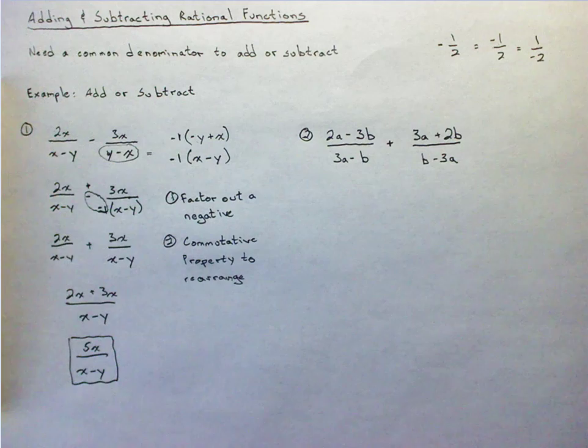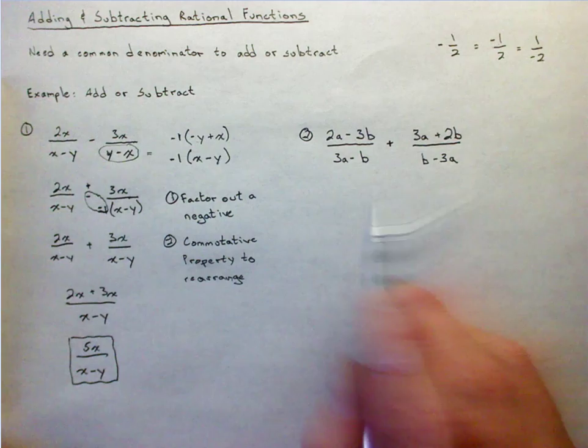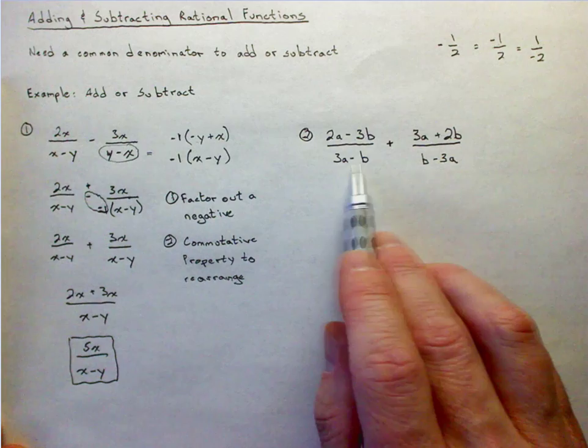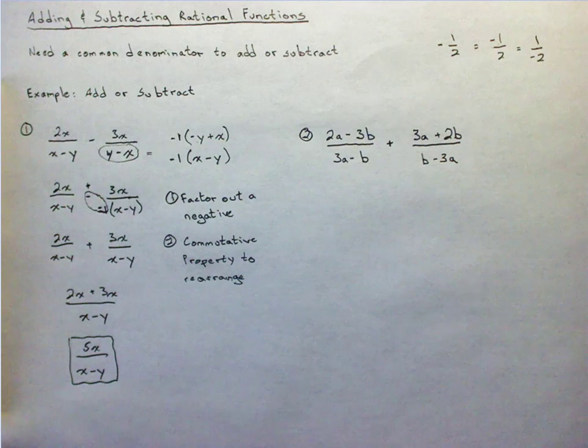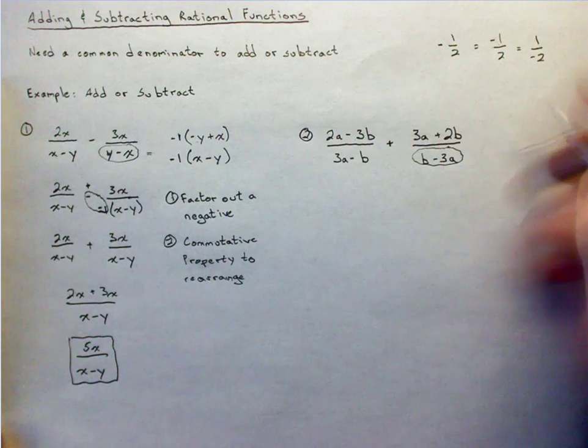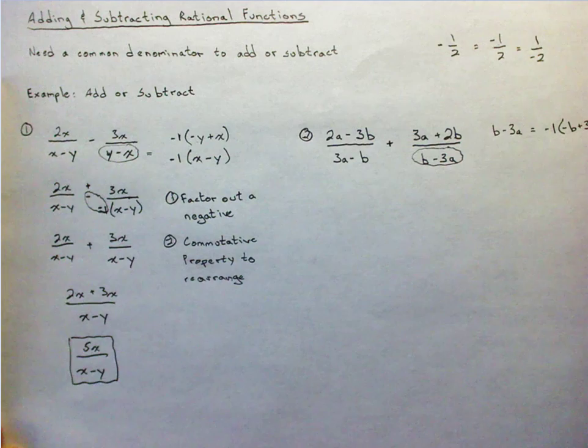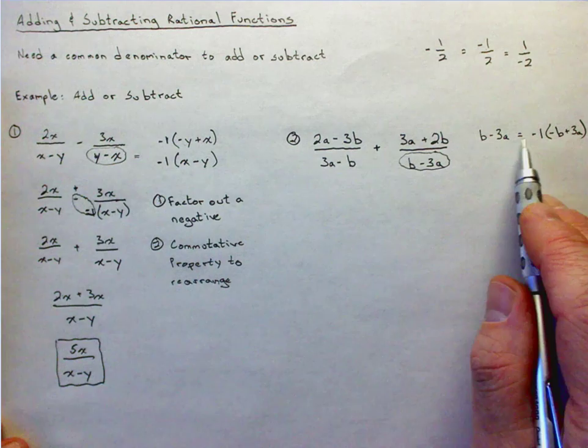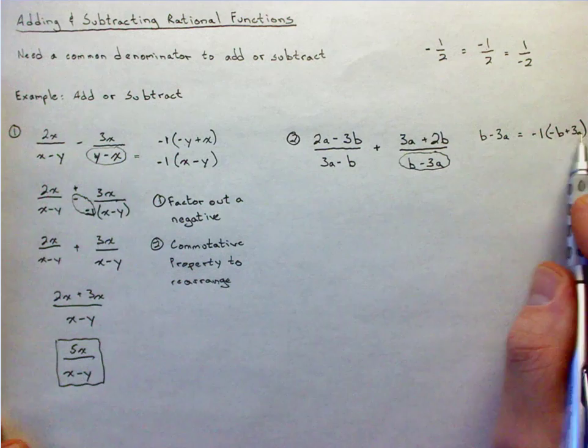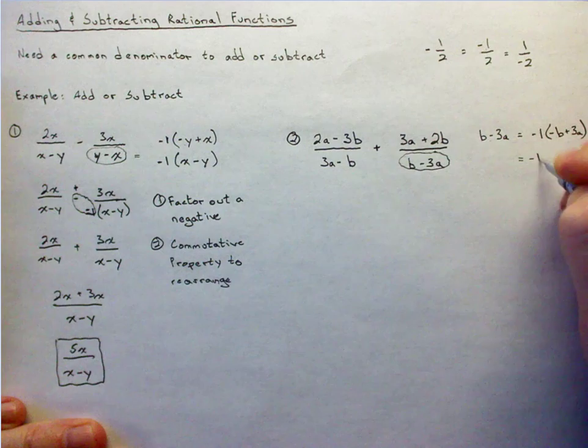All right. So I look and I see my signs are opposite in each term in the denominator. This is a positive 3a, a negative 3a, a negative b, a positive b. So I know I'll use this denominator right here. If I were to factor out a negative one, b minus 3a equals negative one times negative b plus 3a. If I were to take that negative one and multiply it, this is what I would get.